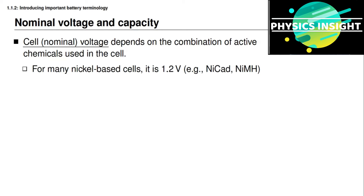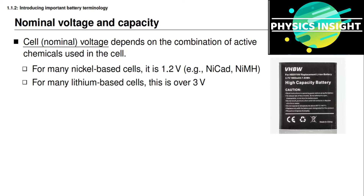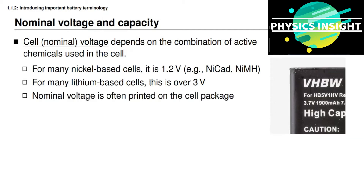For many single-use or primary battery cells, this voltage is around 1.2 volts — for example, standard alkaline dry cells. Some rechargeable secondary cells with nickel-based chemistries like nickel-cadmium or nickel-metal hydride also have voltages around 1.2 to 1.5 volts. Most lithium-based cells have a nominal voltage of over 3 volts, whether primary or secondary. The photograph on the slide shows an example lithium-ion cell from a mobile phone with a nominal voltage of 3.7 volts printed on the packaging.